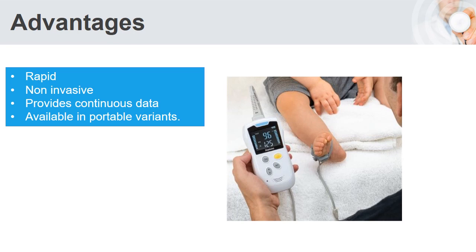Regarding advantages: it is a rapid device that can tell you saturation within seconds, provided the limb is not moving. It is non-invasive — unlike ABG sampling, which is invasive and painful, the pulse oximeter is non-invasive and painless. It also provides continuous data: when placed on a finger, toe, infant's foot, or earlobe, it gives continuous pulse-to-pulse saturation variation along with heart rate.